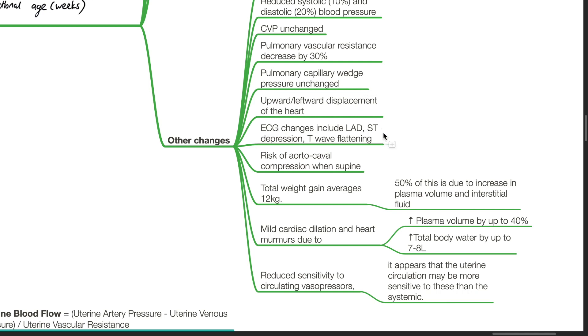Upward-leftward displacement of the heart. ECG shows left axis deviation, ST depression, T-wave flattening. Risk of aortocaval compression when supine. Total weight gain average 12 kg, 50% of this due to increase in plasma volume and interstitial fluid.